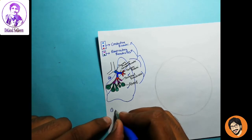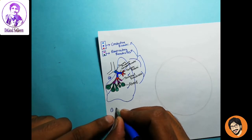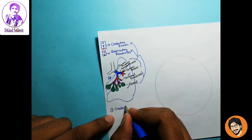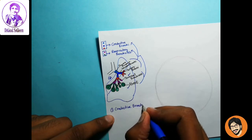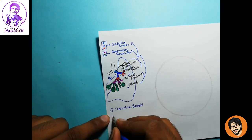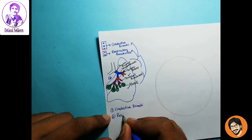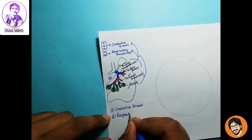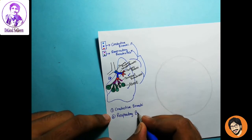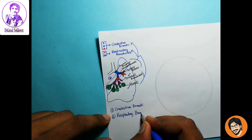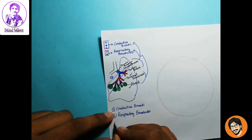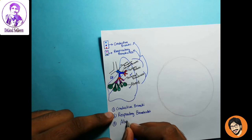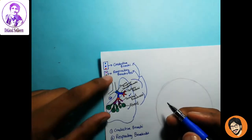3. Conductive bronchiole. 3. Respiratory bronchiole. 4. Bronchiole. 2. Respiratory bronchiole. 3. Bronchiole. Alveoli. So basically, what happens?